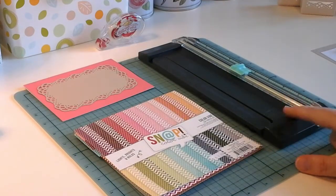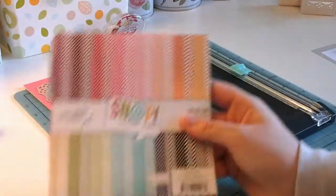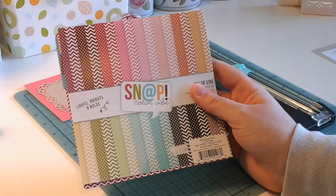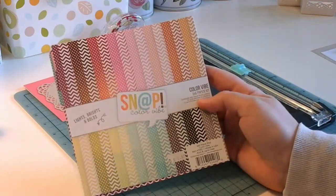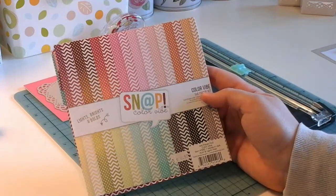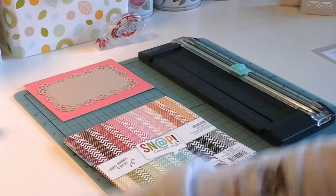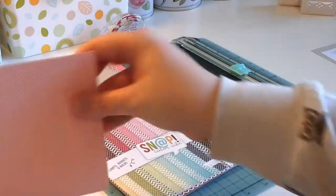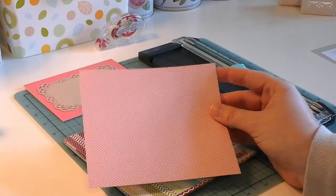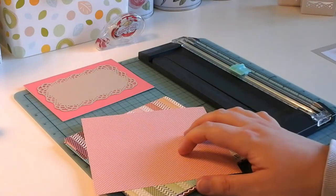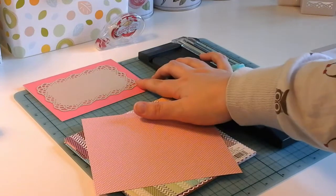Now using my paper trimmer again, I've taken a color from this paper pack. It's the Snap Color Vibe in the lights, brights, and bolds, and this is another pink that I've chosen. Let me just show you the color here. It's a little bit on the salmon side, but it's lighter than the card stock.